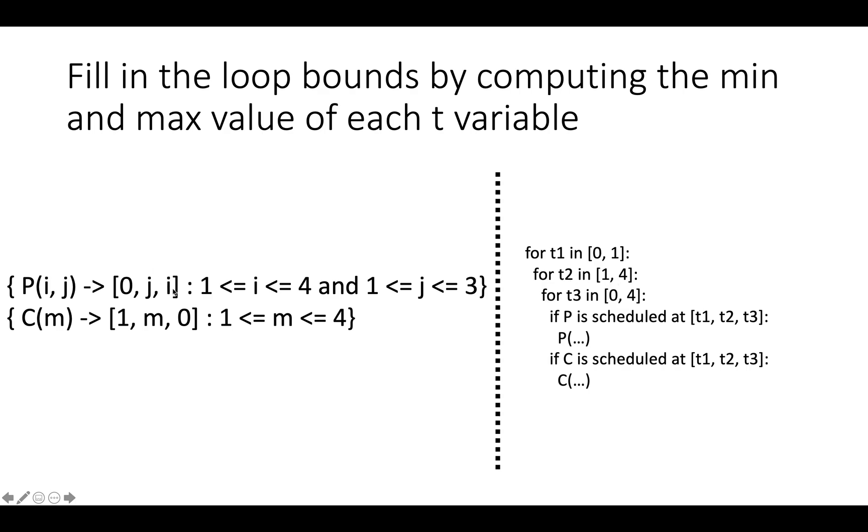And then a similar procedure will tell us that for i, in the third component, P(i,j) is scheduled at time i, where i is between one and four. So the min is one and the max is four. But then actually we have to extend that because C(m) is scheduled at time zero in component three. So t3 will range from time zero to time four.